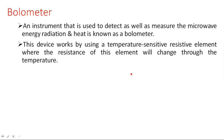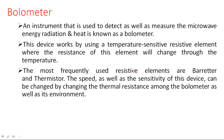You may remember we have studied about thermistors and thermometers — there also we used a similar case, like variation in the temperature with respect to variation in the resistance. A similar method is used here also for the bolometer, where the microwave radiation or heat energy is measured through the change in the resistance element. The most frequently used resistive elements are barretter and thermistor. A thermistor is a thermally sensitive resistor, and a barretter is a similar type of device that also shows a change in resistance with respect to the change in temperature.